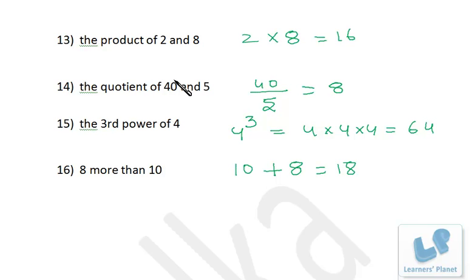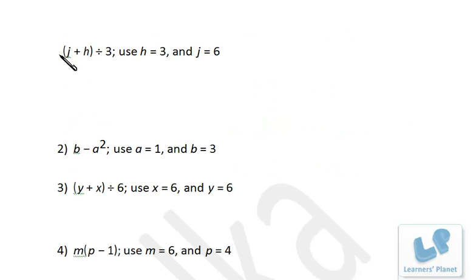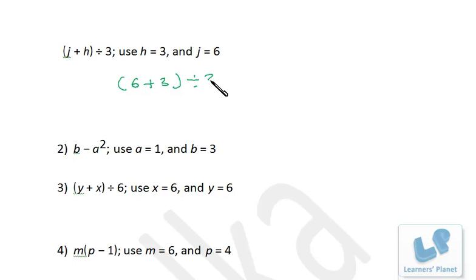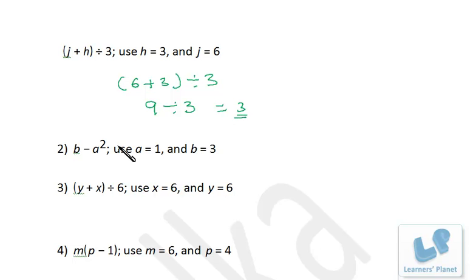Now let's say we have (j plus h) divided by 3, with h equals 3 and j equals 6. Putting in the values: (6 plus 3) divided by 3. As per BODMAS, solve the bracket first: 6 plus 3 is 9, then 9 divided by 3 is 3. Next, b minus a squared with b equals 3 and a equals 1: 1 squared is 1, so 3 minus 1 equals 2.